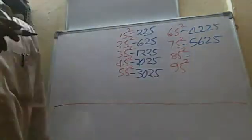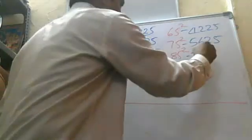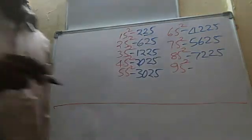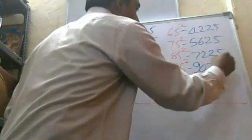85². 8 after 9. 8 into 9 is 72, so 7225. The next number is 95². 9 after 10. 9 into 10 is equal to 90, so 9025.